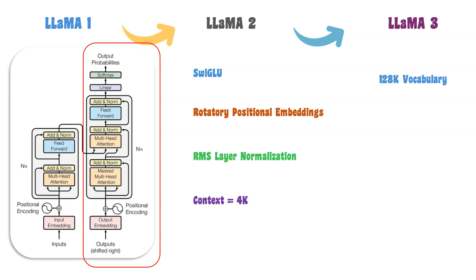Llama 3 uses a large vocabulary of 128K tokens, which is 4 times the vocabulary size of the Llama 2 model. This larger vocabulary can encode text more efficiently, which leads to substantially improved model performance, especially for non-English languages. Grouped query attention is used to improve inference efficiency. The context length is doubled, increased to 8K tokens.